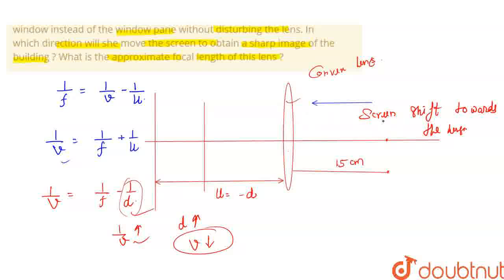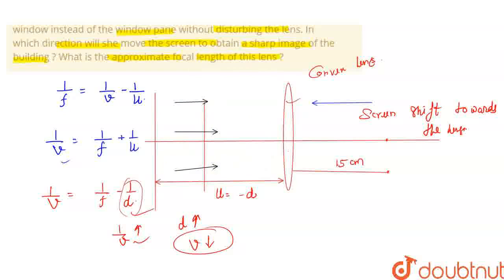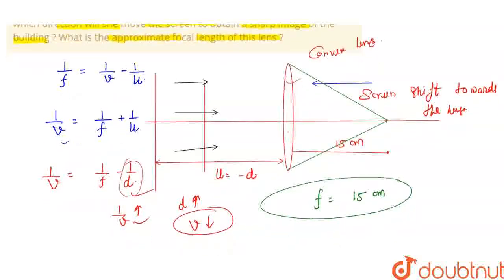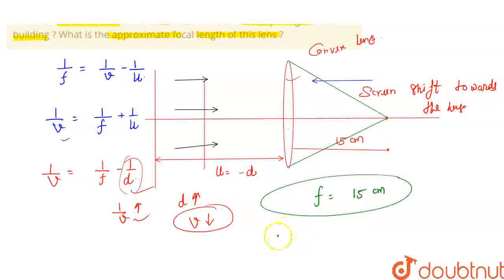Now let's talk about the second part — approximately the focal length. Here is a building, so the rays coming from the building will be parallel rays. The lens will act as a parallel lens and these parallel rays will focus on a point. So the approximately focal length will be this distance, which is 15 cm. So we can say that the approximate focal length is 15 cm.